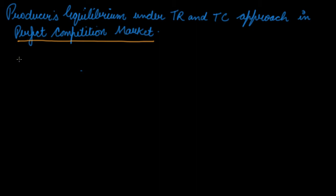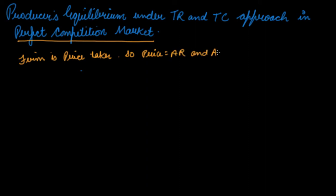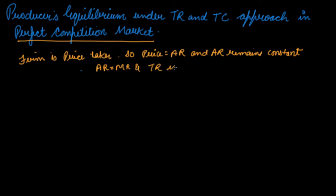In perfect competition, a firm is a price taker, so your price is equal to AR, and your AR remains constant. If your AR remains constant, then AR is equal to MR, and your TR increases at a constant rate. This was covered in the revenue videos related to this topic.